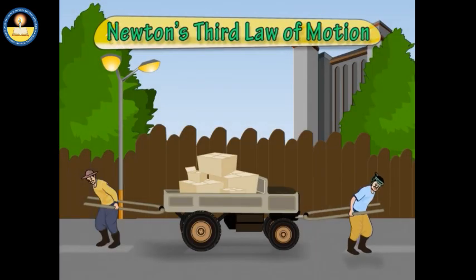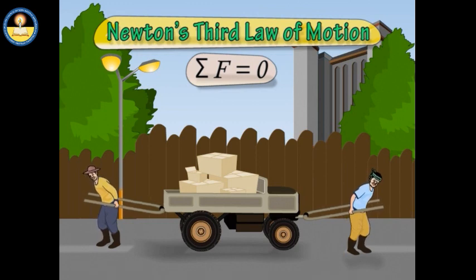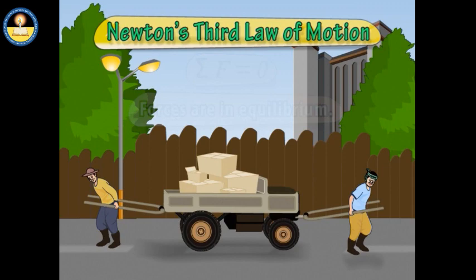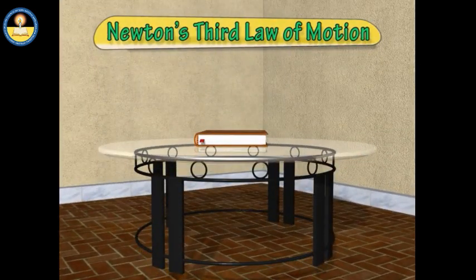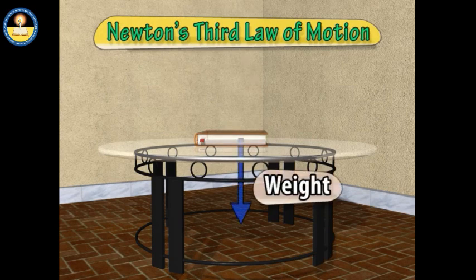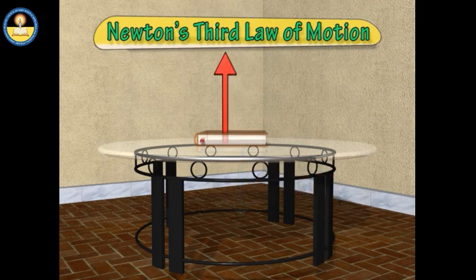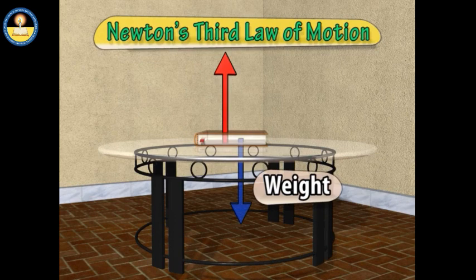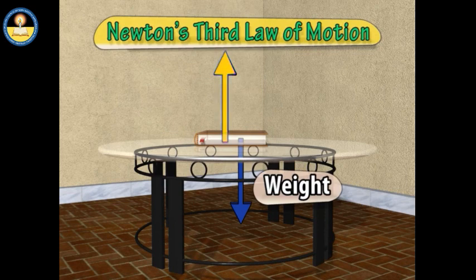When the net force acting on a body is zero, the forces are balanced or in equilibrium. For example, when a book rests on a table, gravity acts on it downward. Since the book is at rest, the net force must be zero, meaning there is a force equal in magnitude and opposite in direction to the book's weight. This upward force is provided by the table and is called the normal reaction or normal force.